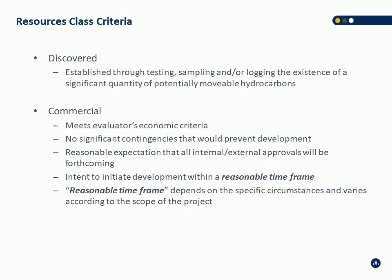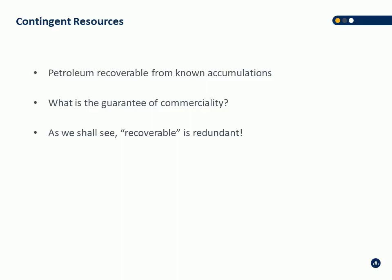Commerciality: in order to be commercial, it has to meet the evaluator's economic criteria — that's a reasonable rate of return, not just 0% or an undiscounted NPV positive. There must be no significant contingencies that would prevent development, a reasonable expectation that all approvals will be forthcoming, and the intent to develop within a reasonable timeframe. In PRMS, the reasonable timeframe depends on specific circumstances and varies according to the scope of the project.